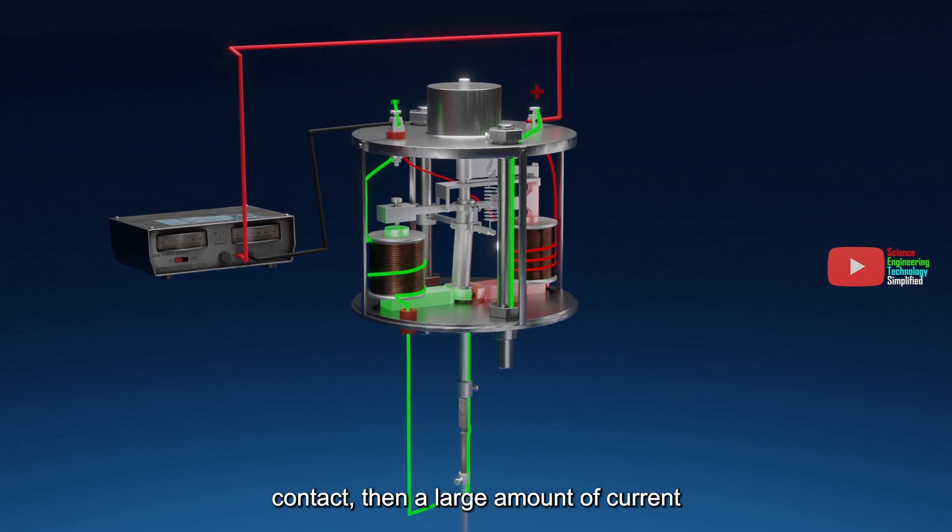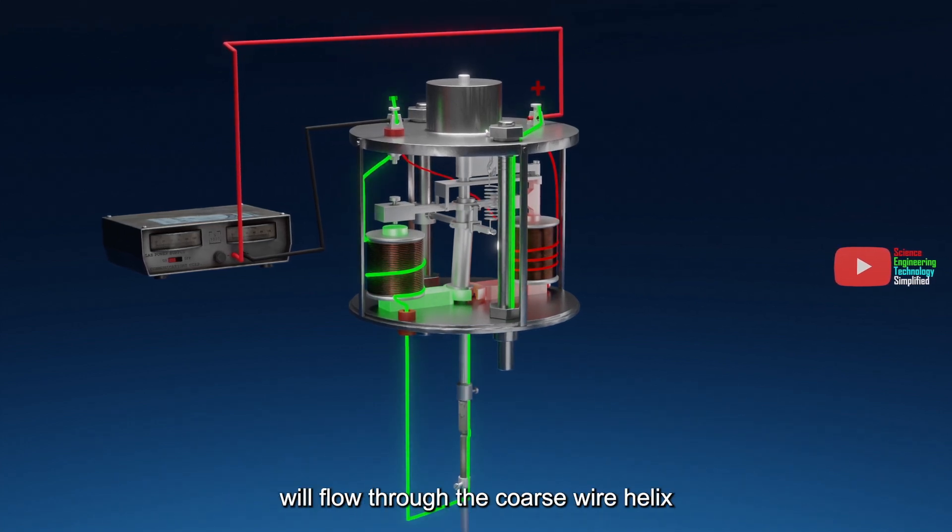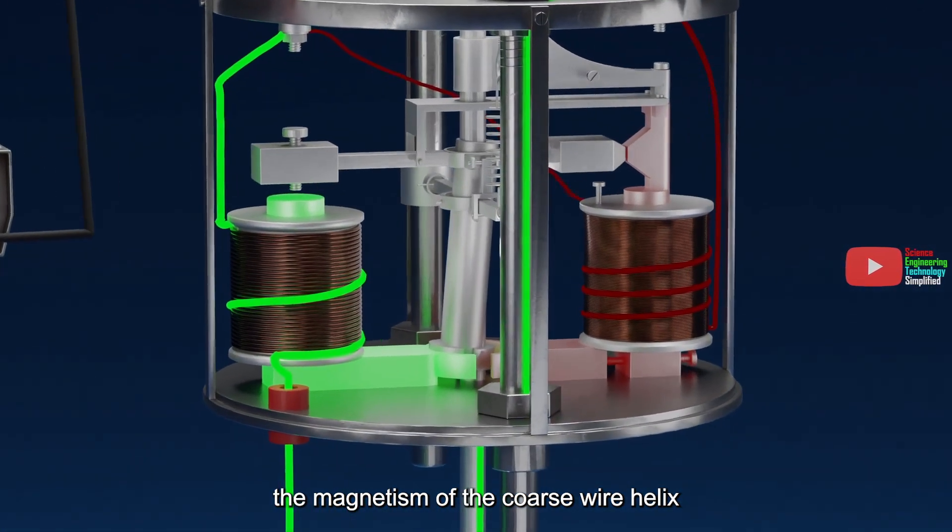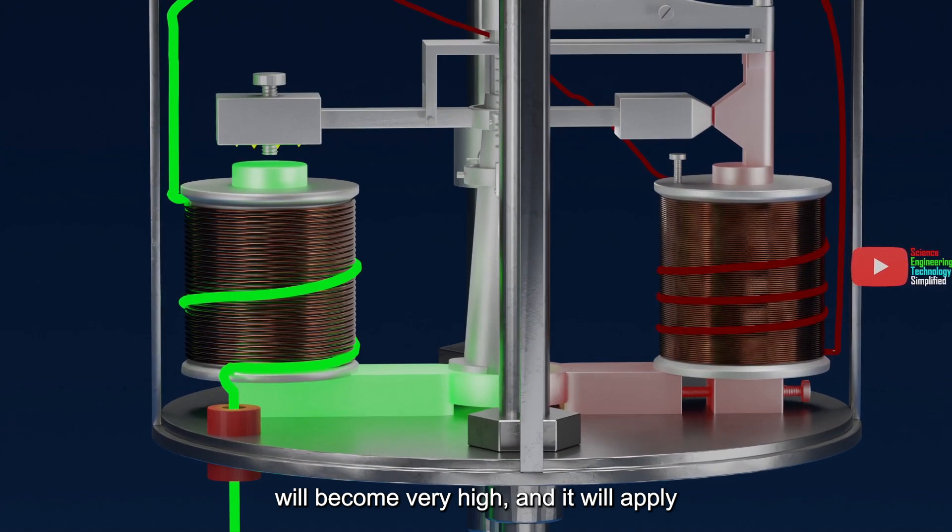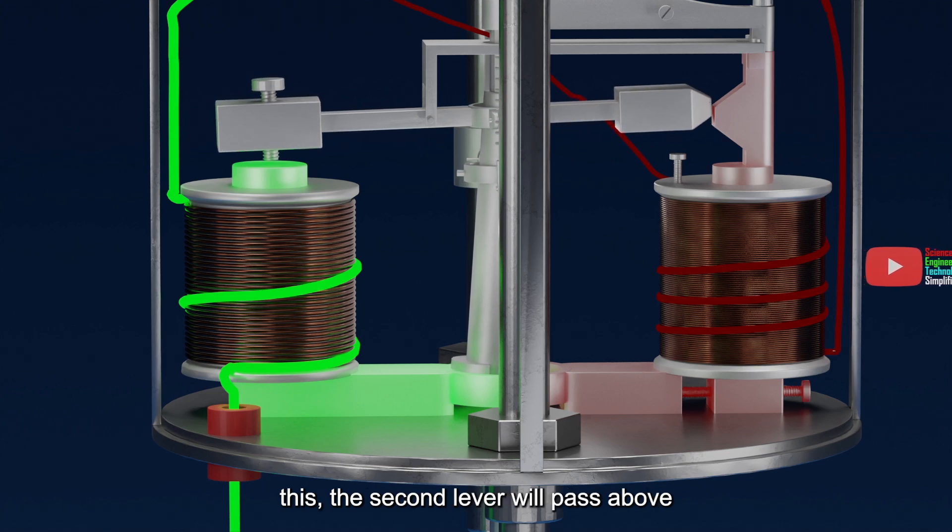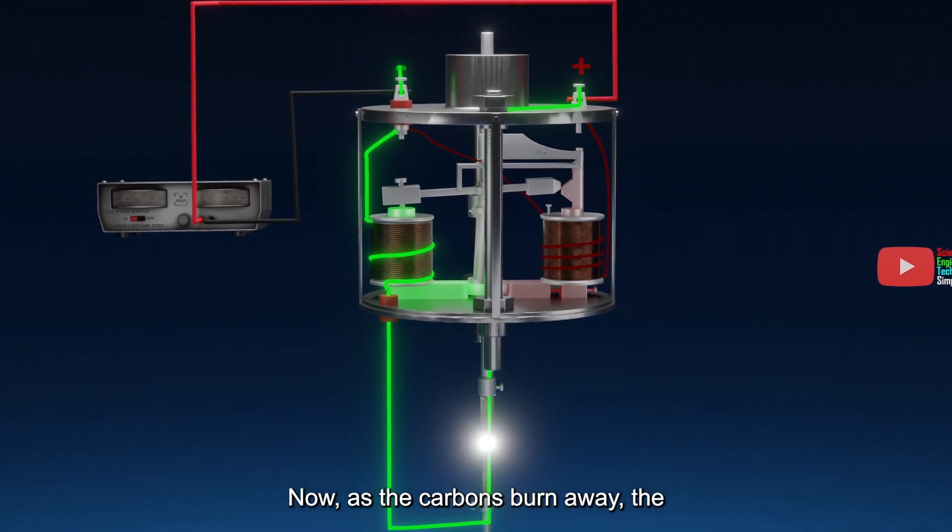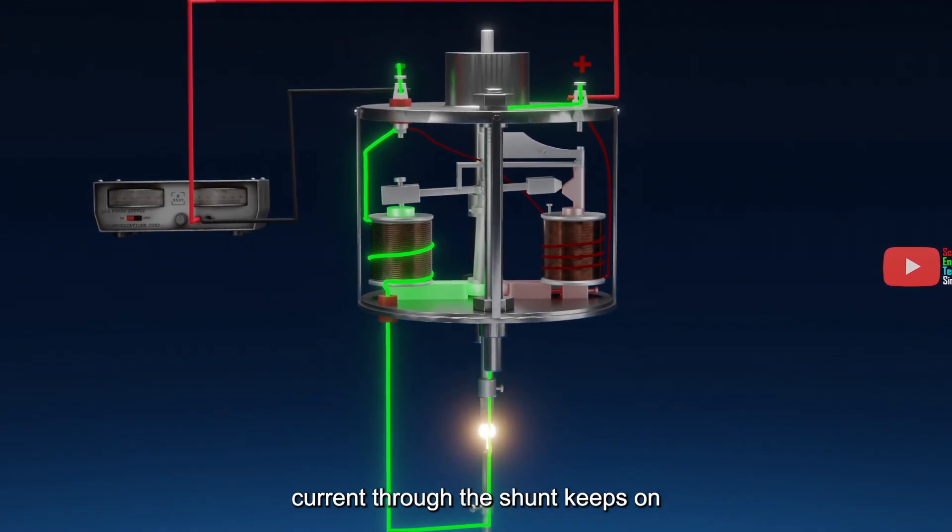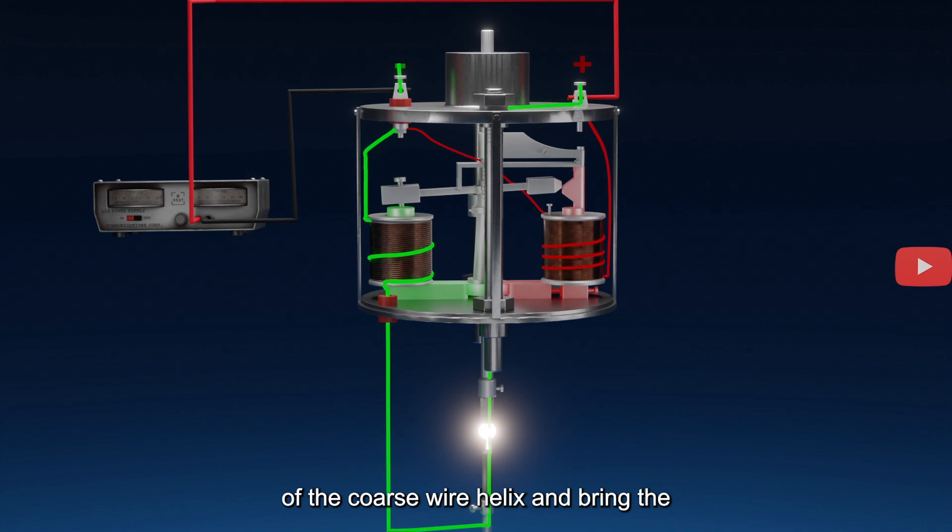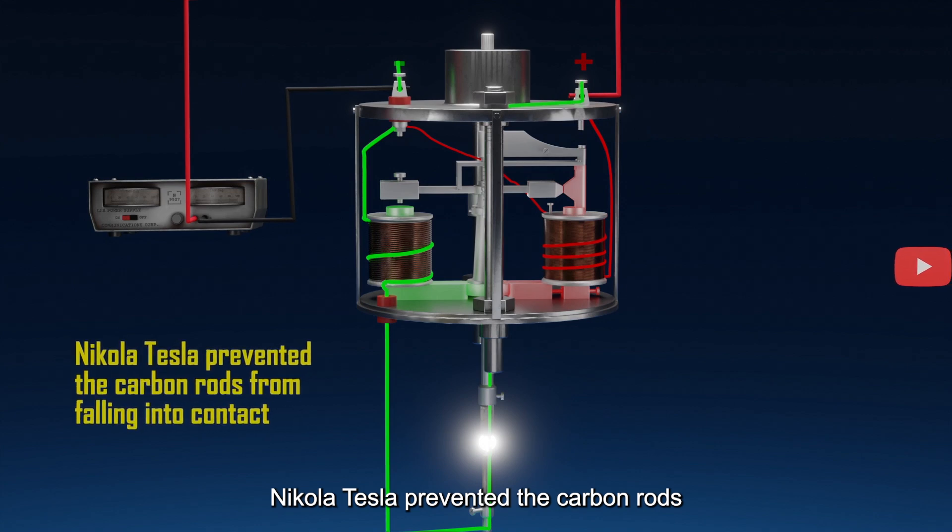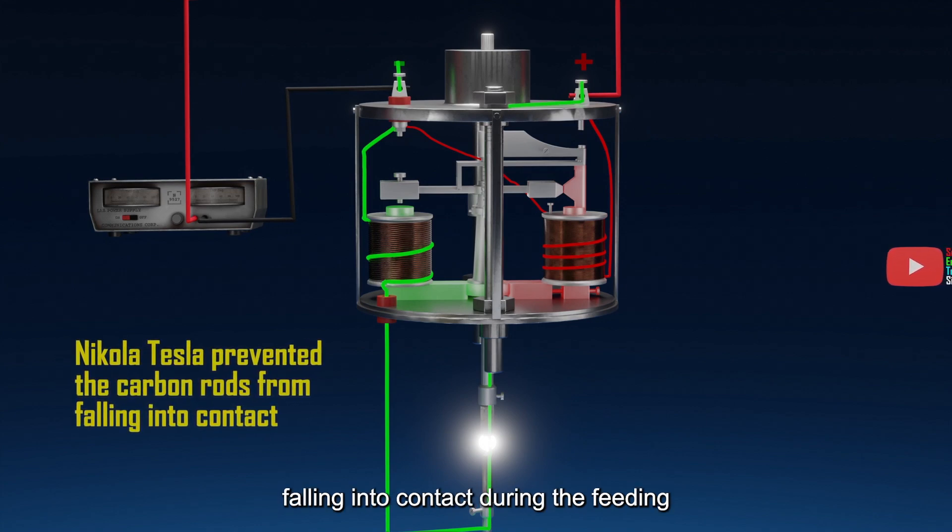Now, suppose the carbons fall into contact, then a large amount of current will flow through the coarse wire helix as compared to the fine wire helix. So, the magnetism of the coarse wire helix will become very high, and it will apply a more magnetic force of attraction on the soft iron armature block. Due to this, the second lever will pass above its normal position, and thus again separate the carbons instantly. Now, as the carbons burn away, the current through the shunt keeps on increasing, until the attraction of the fine wire helix overcomes the attraction of the coarse wire helix, and bring the armature lever again into the normal horizontal position. In this way, Nikola Tesla prevented the carbon rods falling into contact during the feeding operations.